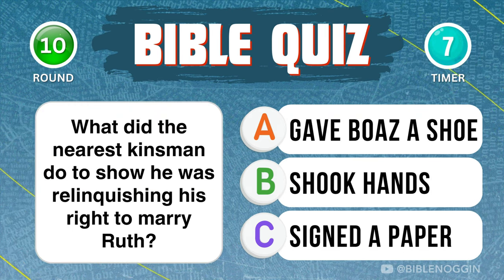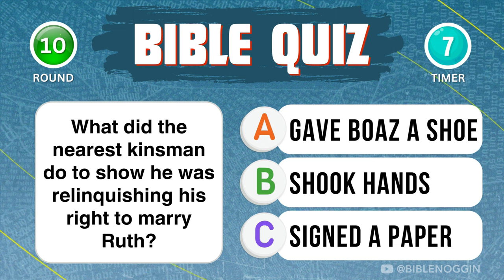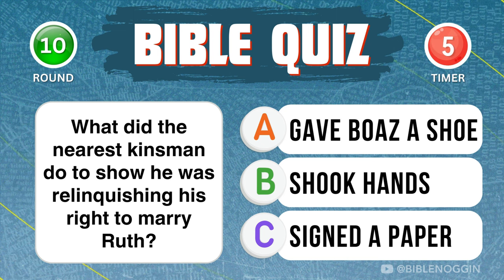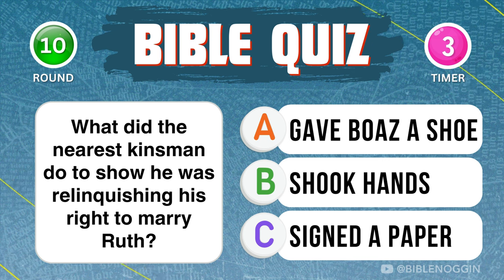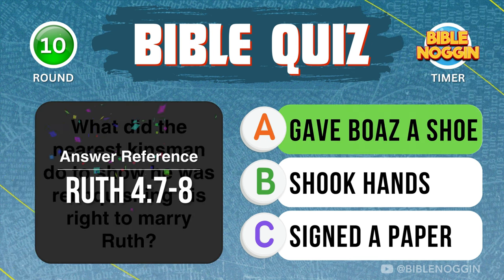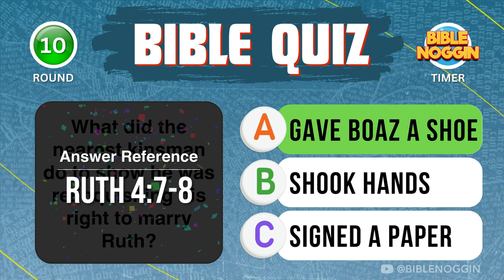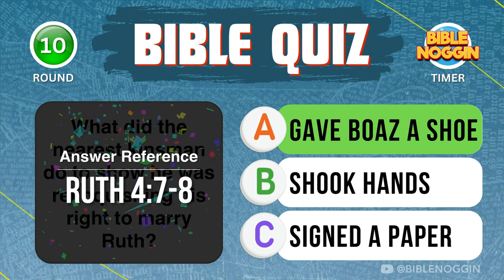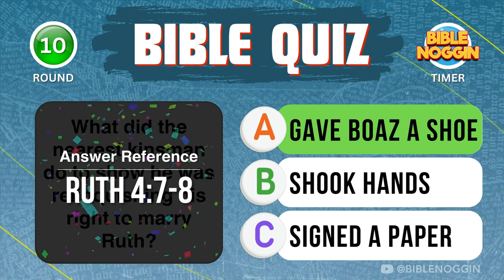Question 10: What did the nearest kinsman do to show he was relinquishing his right to marry Ruth? He gave Boaz a shoe — found in Ruth chapter 4, verses 7 through 8.